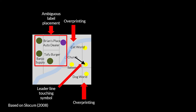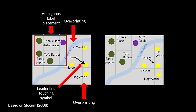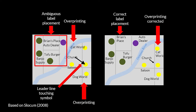This image shows the previous map but with the label issues corrected. For example, note how labels for the symbols in the upper right corner have been modified to use the best label placement strategies so as to remove ambiguity. Overprinting has also been corrected. Symbol leader lines have been resized so as to not touch the label or symbol. And finally, a symbol mask has been used to allow the label to overprint cleanly on the road.